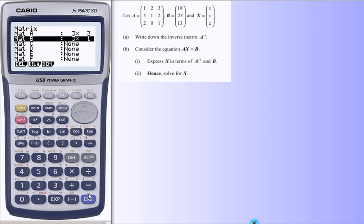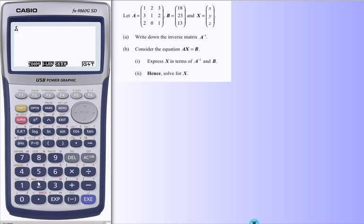And I can call those matrices back onto the screen if I wish. Shift button to matrix matrix. And alpha A. Matrix A, there it is. Okay. Right, things to do.